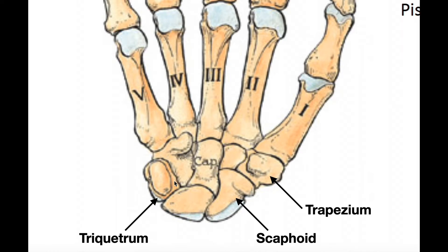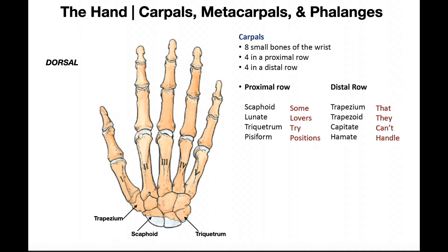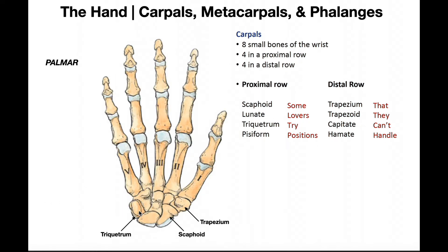When we turn the hand over, we're not going to be able to see the pisiform. So from the thumb side to the pinky side on the proximal row, we have scaphoid, lunate, triquetrum, and then pisiform. If we flip this over to the dorsal aspect, notice we no longer can see the pisiform because it's on the other side of the triquetrum. Because you can't see the pisiform on the dorsal side, you would know this is the dorsal side of the hand. On the palmar side, we can see the pisiform — that's the only side where you can see it.